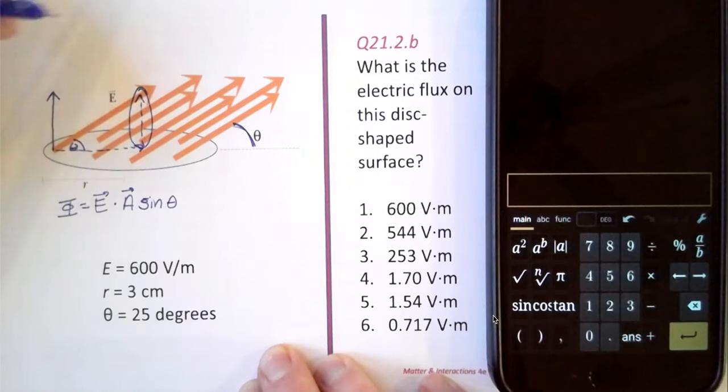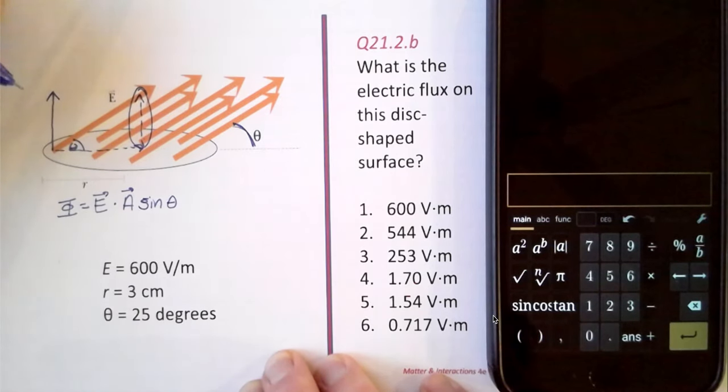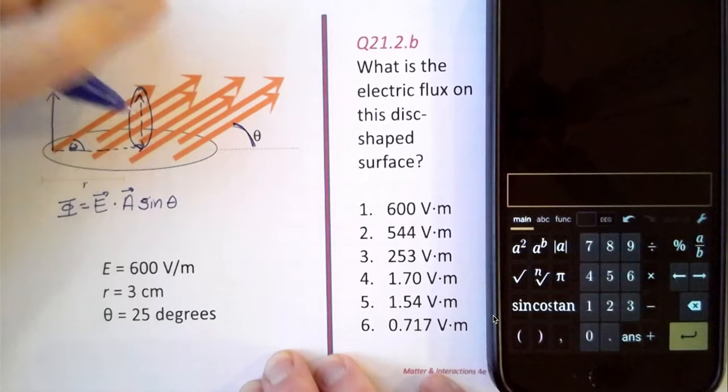This vertical component is opposite the angle theta. So that's going to be the sine of the angle, which is going to give us the vertical component.